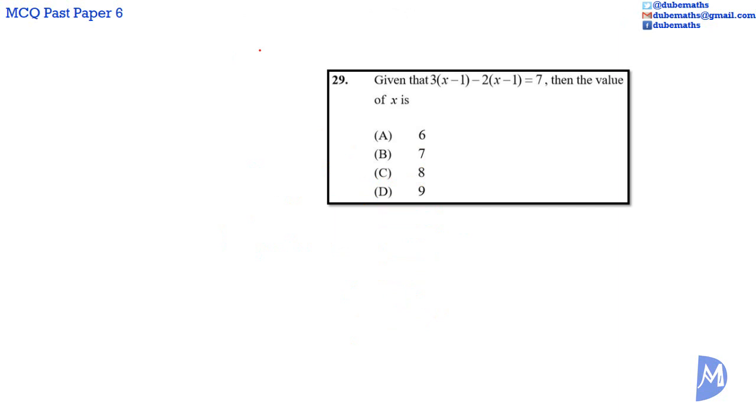Question 29: We have 3 multiplied by X minus 1 minus 2 multiplied by X minus 1 is equal to 7. Expanding brackets.